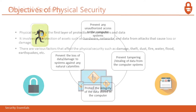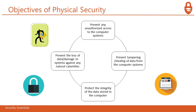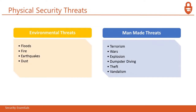Physical security threats include environmental threats such as floods, fire, earthquakes, and dust, and man-made threats such as terrorism, wars, explosions, dumpster diving, theft, and vandalism. We have to prevent our devices from these threats. Physical security controls include premises and company surroundings: fences, gates, walls, guards, alarms, CCTV cameras, intruder systems, panic buttons, burglar alarms, window and door bars, and deadlocks.